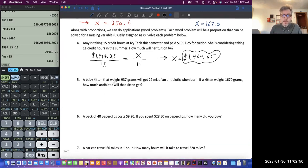All right. Next up, we have a baby kitten that weighs 937 grams, and we'll get 22 milliliters of an antibiotic when born. If the kitten weighs 1,670 grams, how much antibiotic will the kitten get? So I'm solving for milliliters. That's what I'm going to try to solve for.